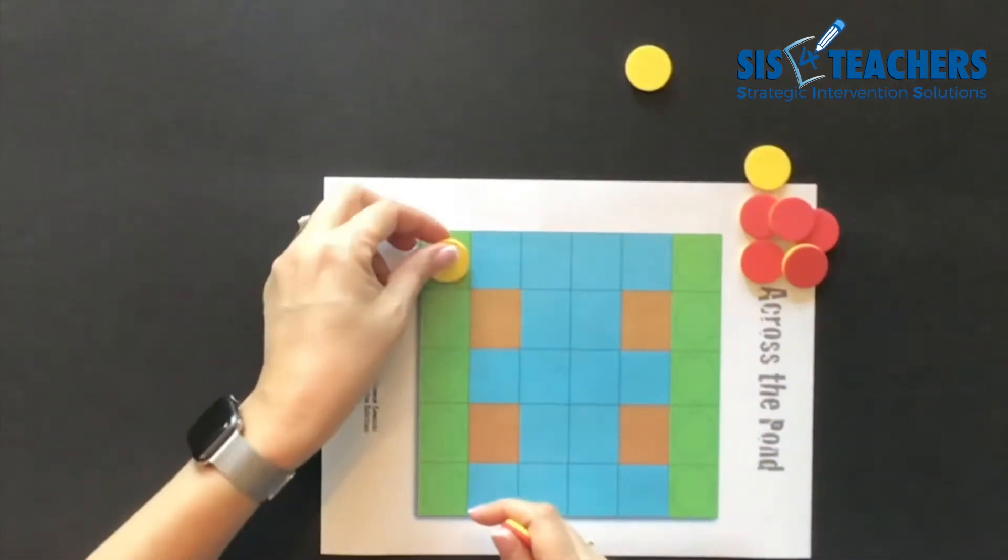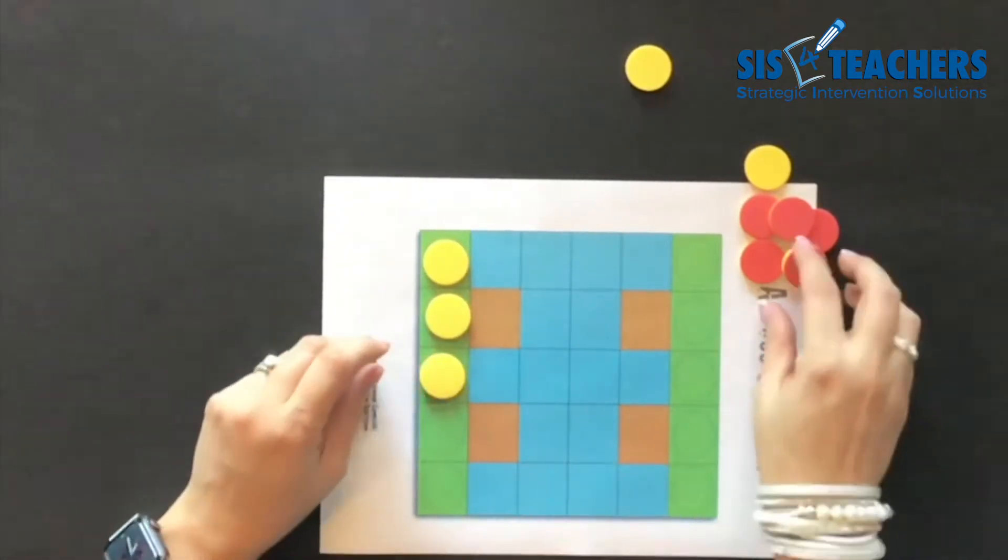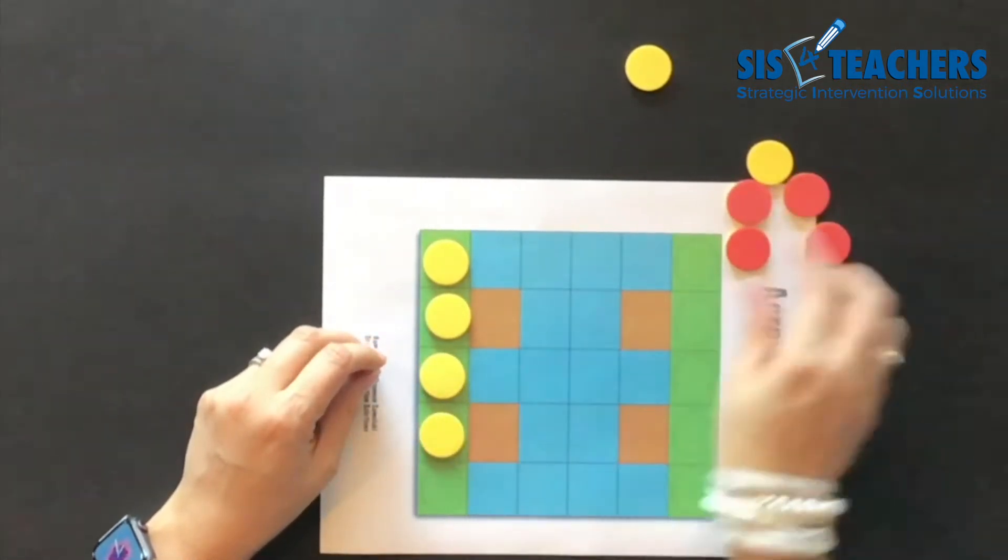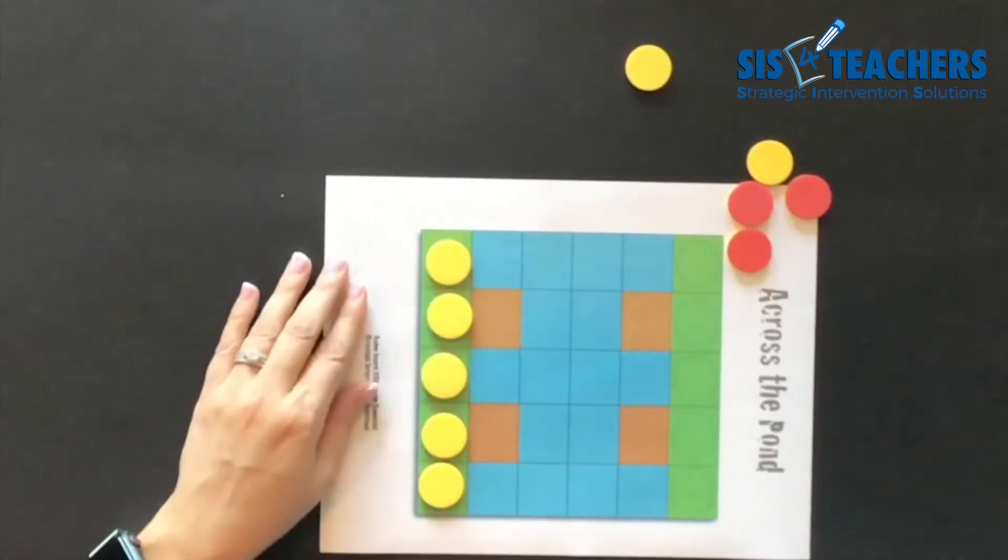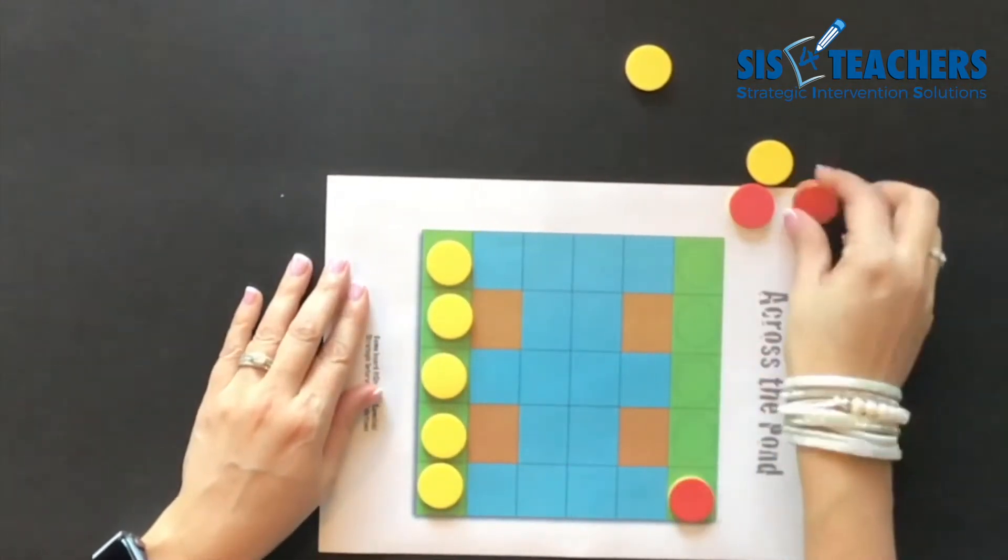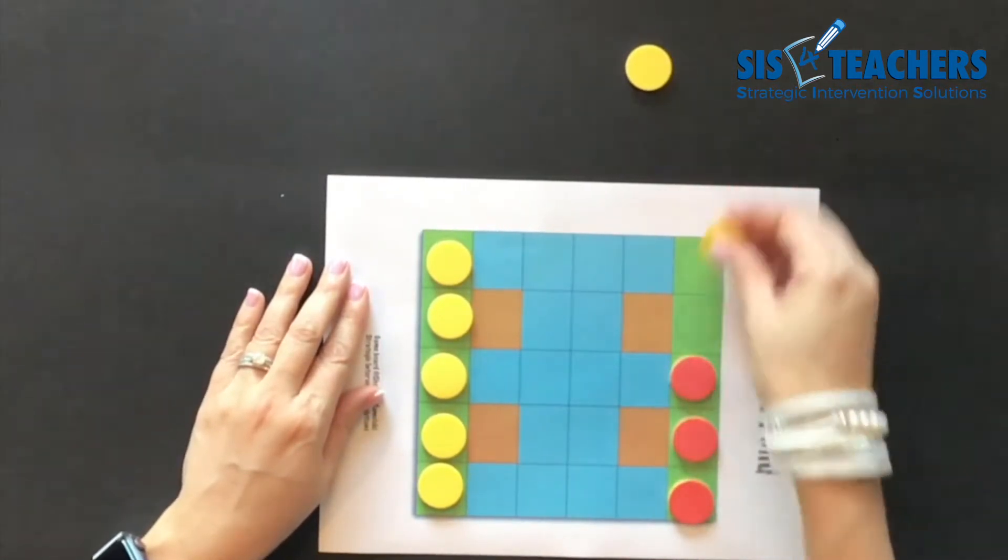I'm going to use two-sided counters. You could certainly use clear counters with this or any other type of counter that slides easily and fits into the boxes. I'm going to have yellow frogs and my friend is going to have red frogs on her lily pads.